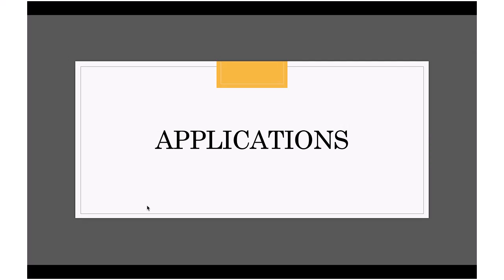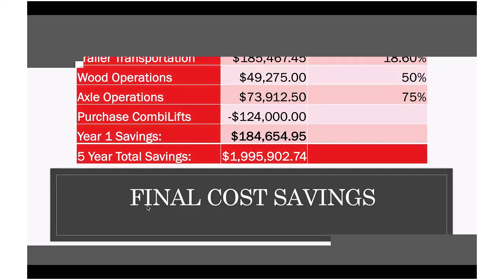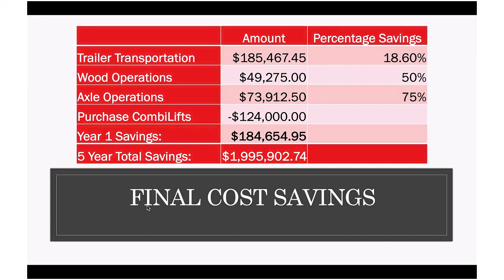Now that we've presented some of our solutions, we're going to go over what it all means for Felling Trailers in our application section. For our final cost savings, we looked at four main operations: trailer transportation, wood operations, axle operations, and then purchasing our combo lifts as I mentioned in the ROI. For trailer transportation, we're expecting an 18.6% savings from having trailers not be routed for as many miles around the Felling campus. Wood operations, we're expecting a 50% savings.